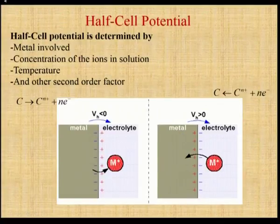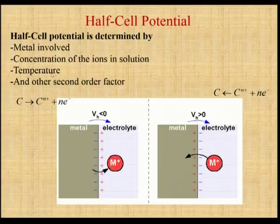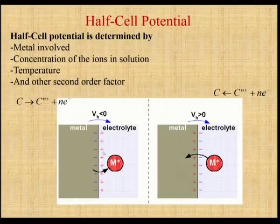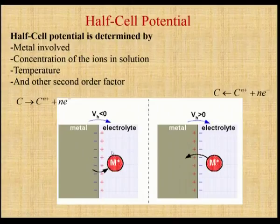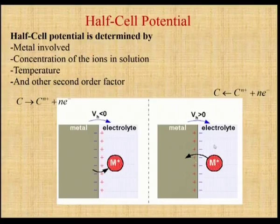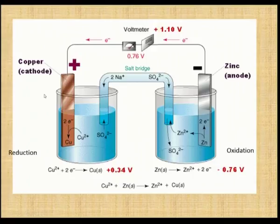Then half cell potential. In the measuring system of the recording setup, half cell potential plays a very important role. The half cell potential is determined by the metal used in the system, the concentration of ions in the solution, and the temperature maintained. These three factors decide the half cell potential value. When VH (half cell potential) is less than 0, the current flows from metal to electrolyte and electrons move from metal to electrolyte. When half cell potential is greater than 0, electrons move from electrolyte to metal.